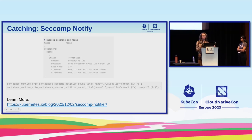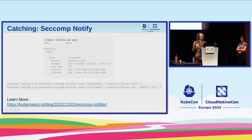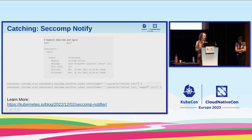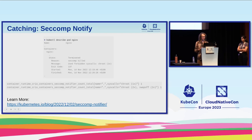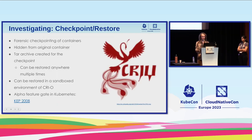It's possible that the syscalls caught were actually expected — maybe it was just an issue with the SecComp profile. So we collect for a little bit longer to avoid a crash-loop backoff situation. Eventually, the action would be either to update the SecComp profile because those syscalls are expected, or to do some diagnostics on why the container was using syscalls we don't expect. For this, we move toward our next feature: checkpoint restore.